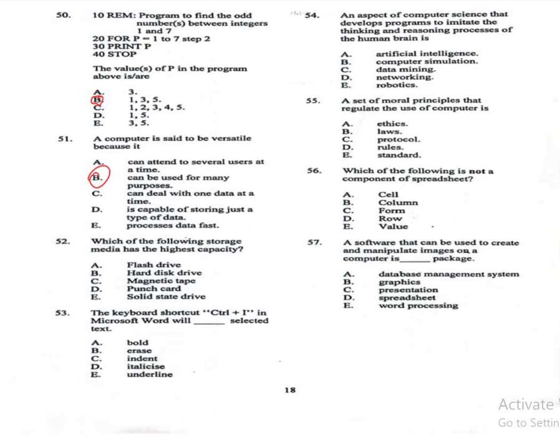Question 52: Which of the following storage media has the highest capacity? A: flash drive, B: hard disk drive, C: magnetic tape, D: punch card, E: solid state drive. The correct answer is B, hard disk drive. Among the listed options, hard disks typically offer the highest capacity, though modern SSDs can also be high. Question 53: The keyboard shortcut Control + I in Microsoft Word with selected text — A: bold, B: erase, C: indent, D: italicize, E: underline. The correct answer is D, italicize.